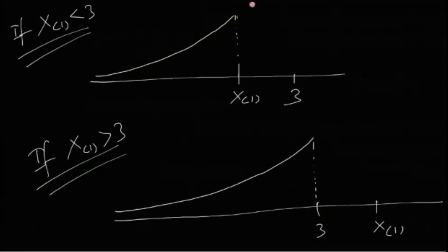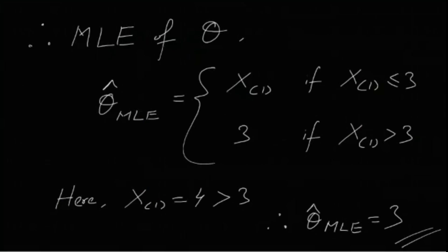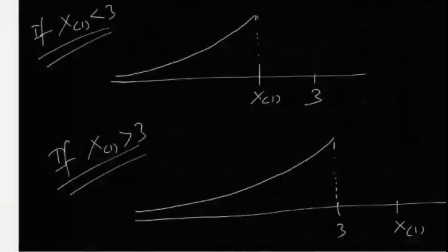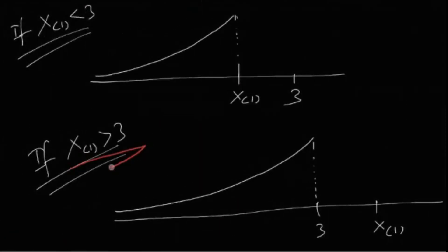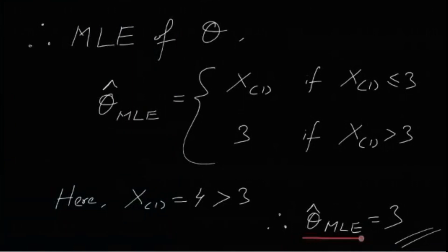So the MLE of θ is x_(1) if x_(1) ≤ 3, and 3 if x_(1) > 3. We can write this compactly as θ̂ = min(x_(1), 3). In our sample, 5, 10, 4, 15, 6, the smallest value is 4, and since 4 > 3, the function achieves its maximum at 3. Therefore the MLE θ̂ = 3.